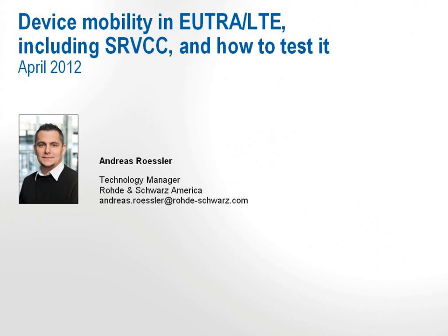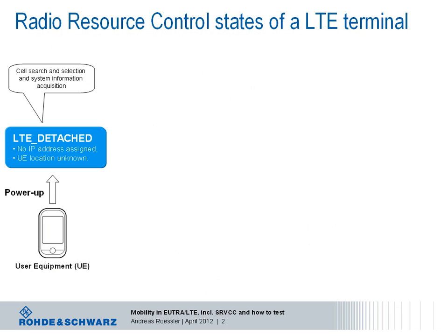That's the first item today that we will take a closer look at. Passive and active connection to the network are understood as different radio resource control states the terminal can have with the network. After the terminal is powered up, it is not attached, its location is unknown to the network, and no IP address has been assigned.